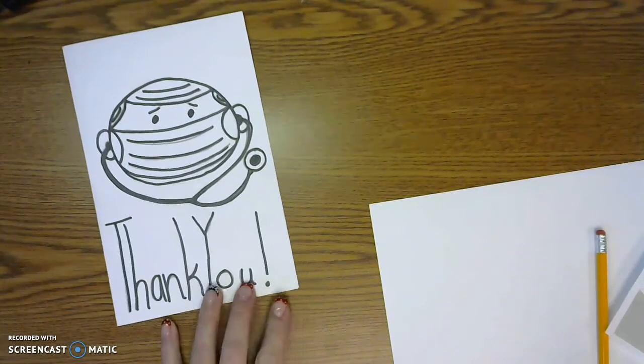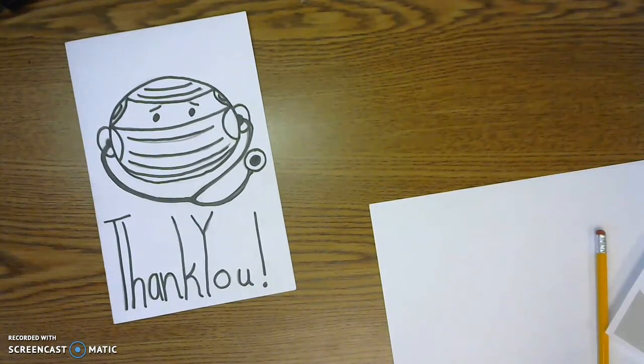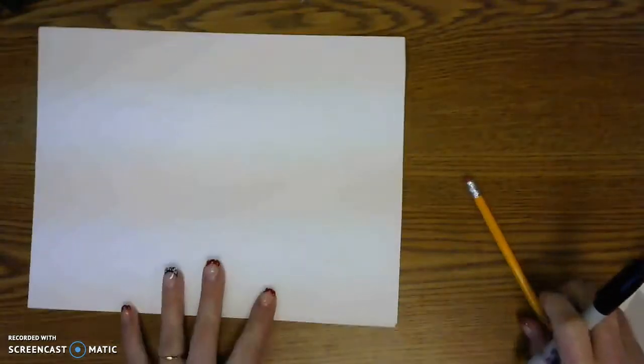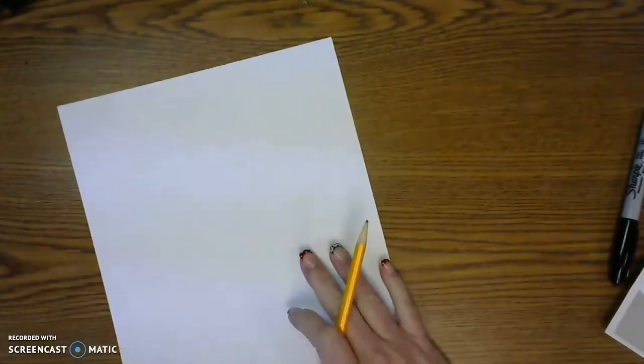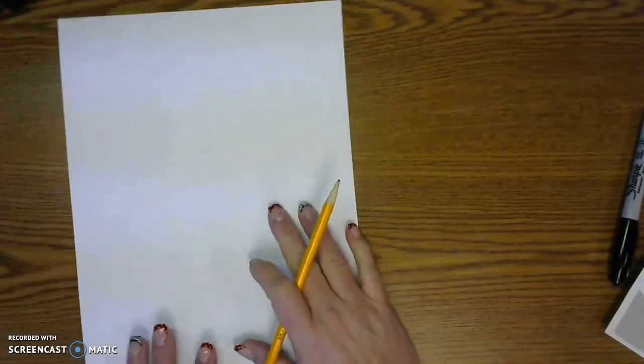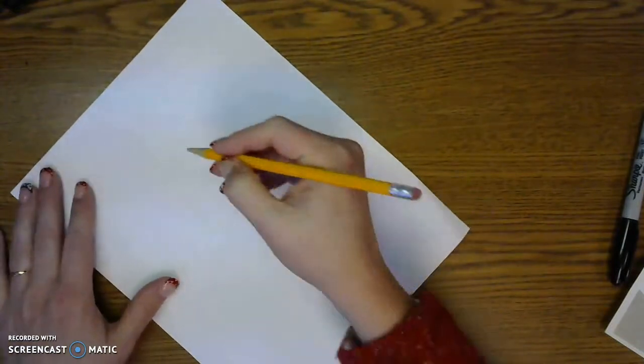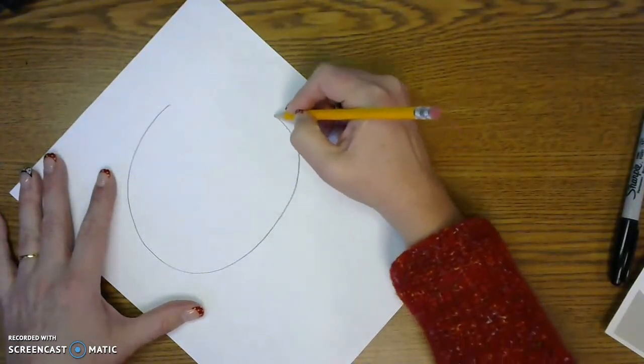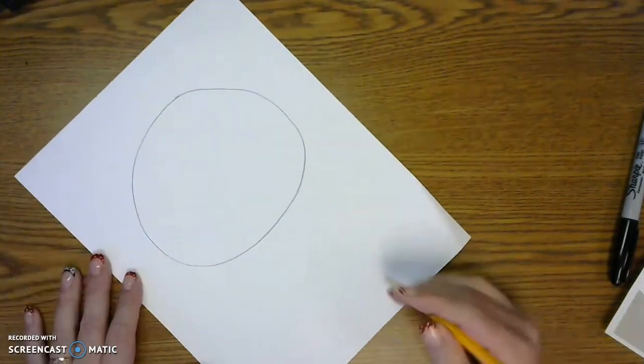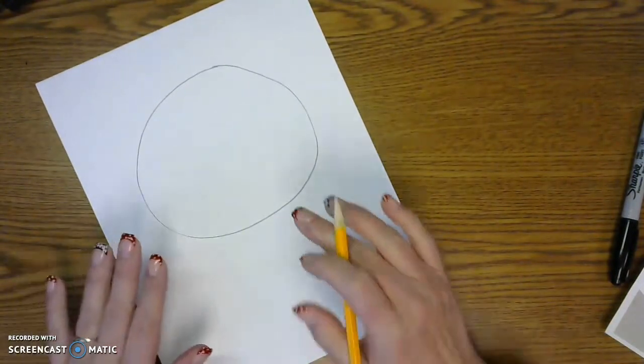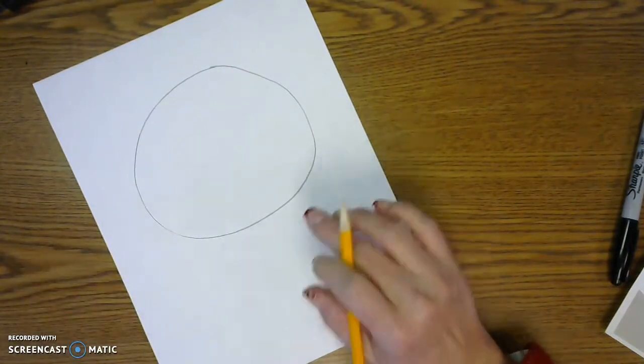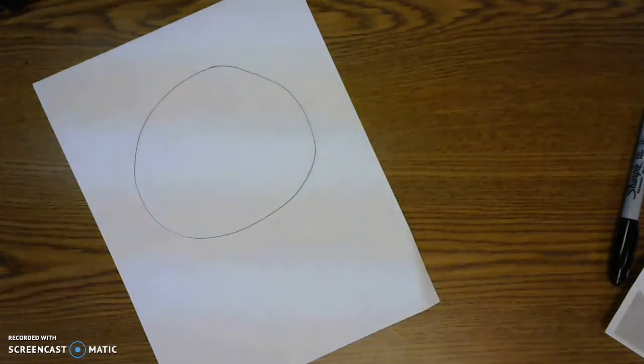So there's one sort of doctor picture and then I was going to do like a nurse as well. Let's see, we'll do a big circle. And you can totally do this same thing like on another piece of paper that you folded and make it into a card as well.